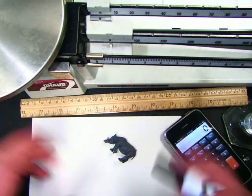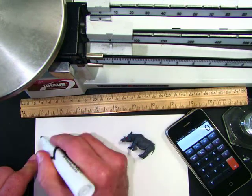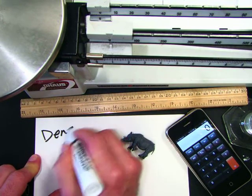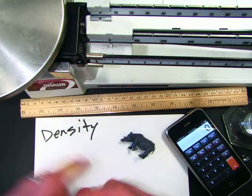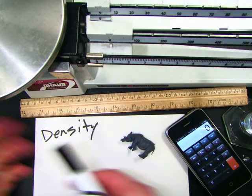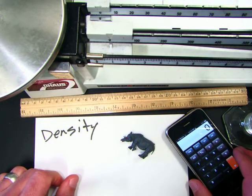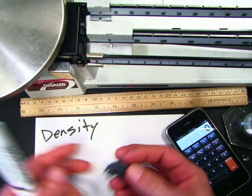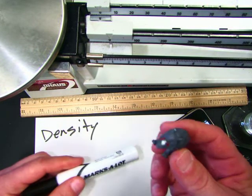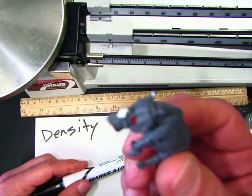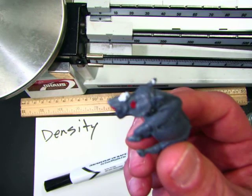Hi, this is Mr. Banner, and I'm going to do another tutorial on how to calculate the density of an irregular object. In the last video, we did the density of an iPhone, which is a regular object, but how would you calculate the density of an irregular object, kind of like this little rhino right here?